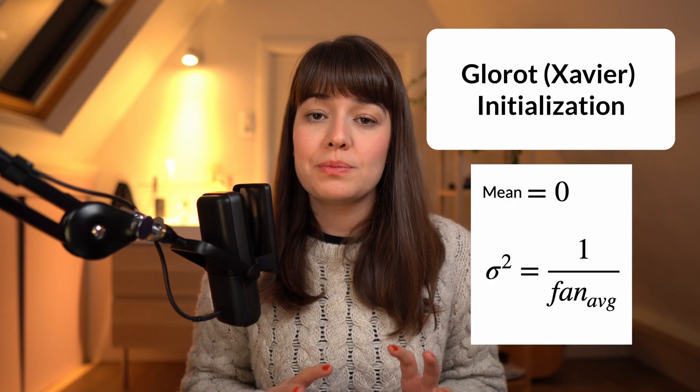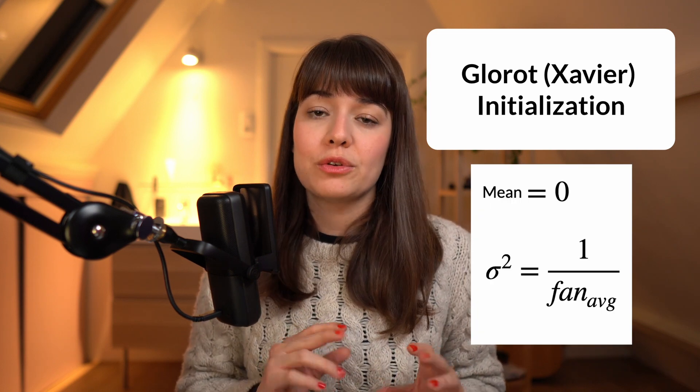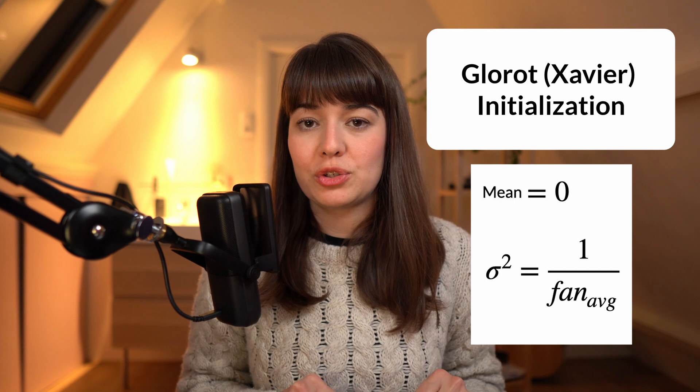What separates these weight initialization techniques is what they set the mean to be and what they set the variance to be. The first technique is called Glorot or Xavier initialization. With this technique we set the random distribution's mean to zero and the variance to 1 over fan average.